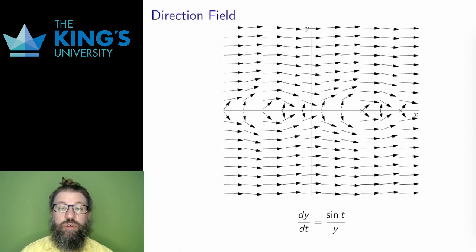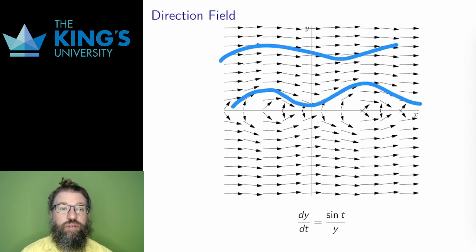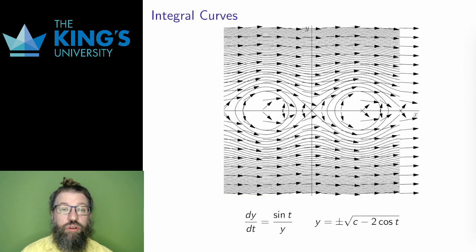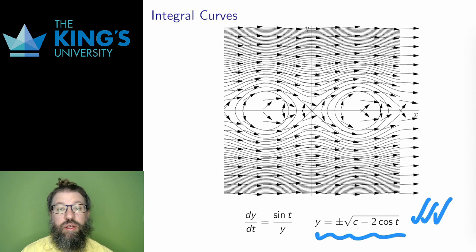Here is the direction field for the DE we just did. I expect solutions that are mostly flat functions, with a bit more oscillation if they are near the x-axis, around these two circles. Well, here are the integral curves, and these are also exactly the graphs of the function y equals plus minus square root c minus 2 cos t, for various values of the constant c. The solutions match the integral curves, as they should.